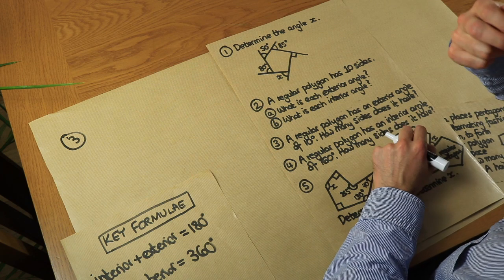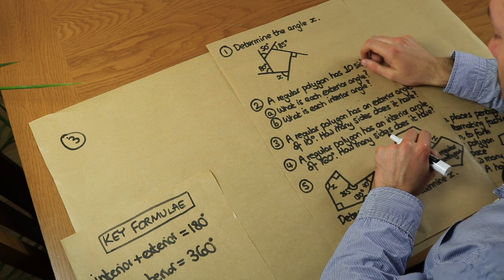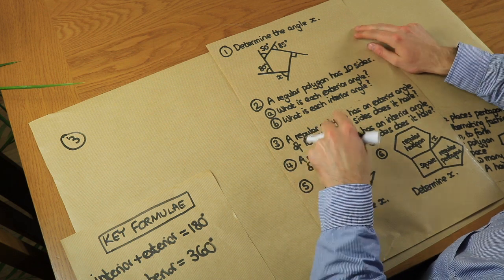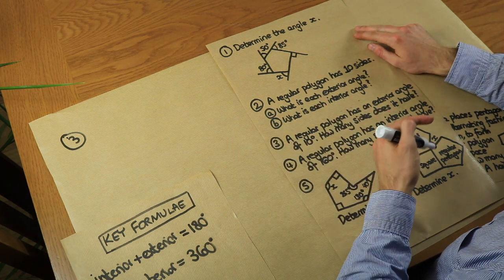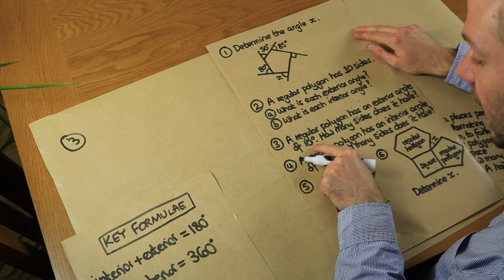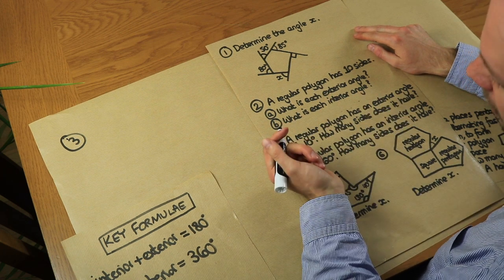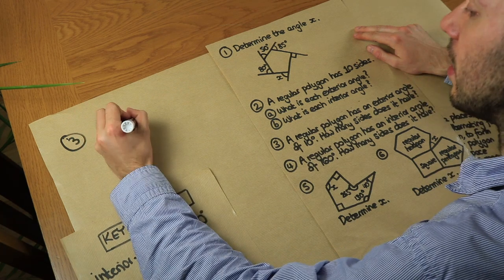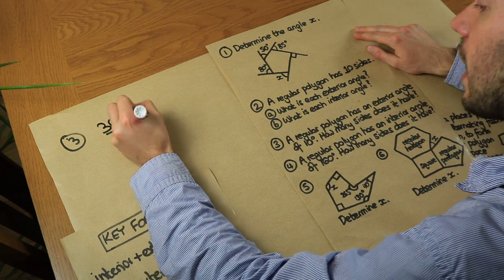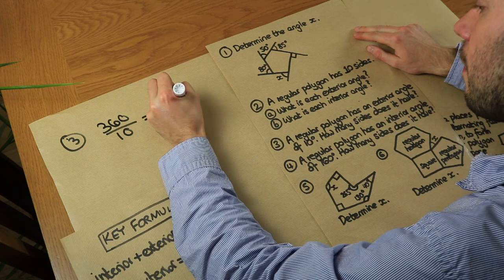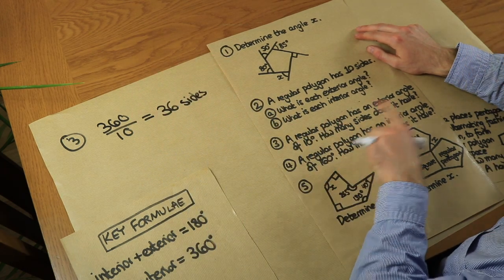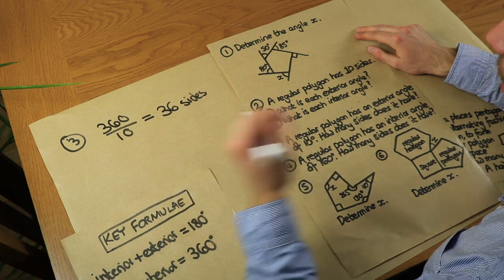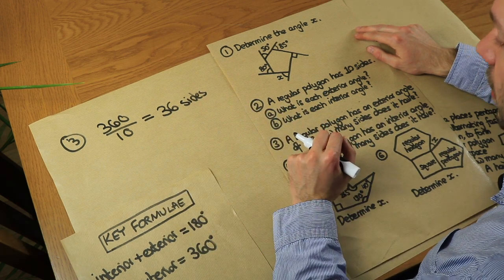Question 3: A regular polygon has an exterior angle of 10 degrees. How many sides does it have? We know the total exterior angle is 360°, divided equally by the number of sides to give 10°. So 360 ÷ 10 = 36. It has 36 sides. This makes sense: 360 ÷ 36 = 10 degrees per exterior angle.